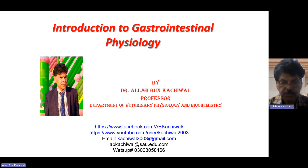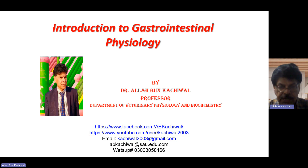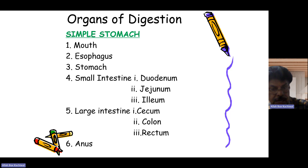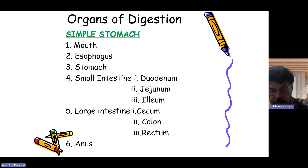Today we are going to discuss the introduction of the gastrointestinal system. The organs of digestion in a simple stomach animal include the mouth, esophagus, stomach, and then the small intestine having the duodenum and ileum. The large intestine consists of the cecum, colon, and rectum, and lastly the anus.